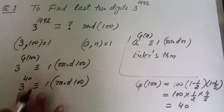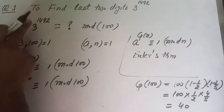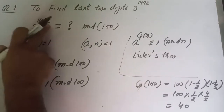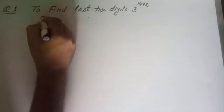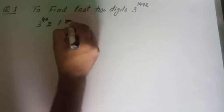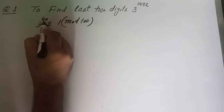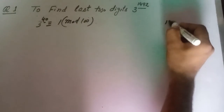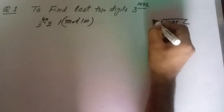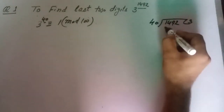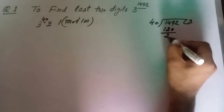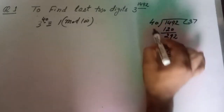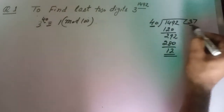Now we extend from 3^40 to 3^1492. We divide 1492 by 40, which gives a remainder of 12. So 1492 = 40 × 37 + 12. We raise the congruence 3^40 ≡ 1 mod 100 to the 37th power, giving 3^1480 ≡ 1 mod 100.